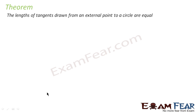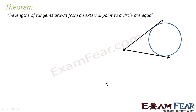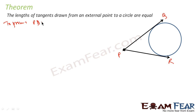The first theorem says that the lengths of the tangents drawn from an external point to a circle are equal. Let's draw a circle and have an external point. From this external point, I have drawn two tangents. I have to prove that these two tangents are equal — for example, this is Q and this is R, so I have to prove that PQ is equal to PR.